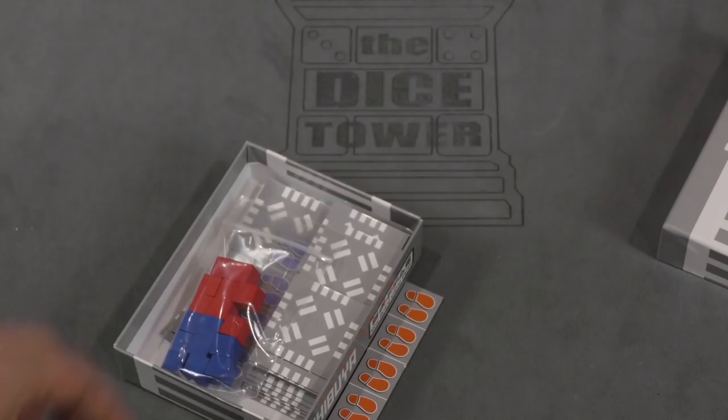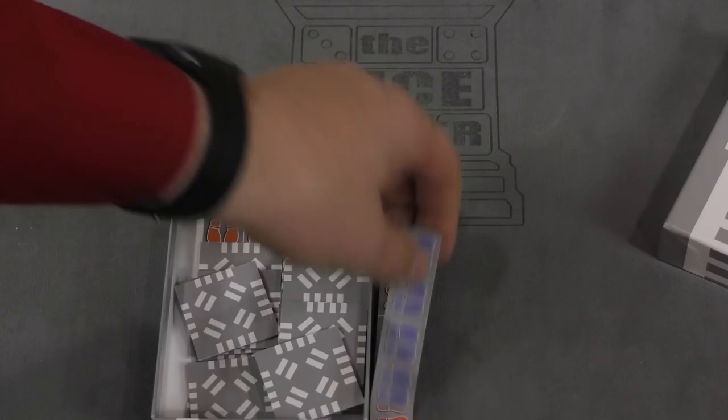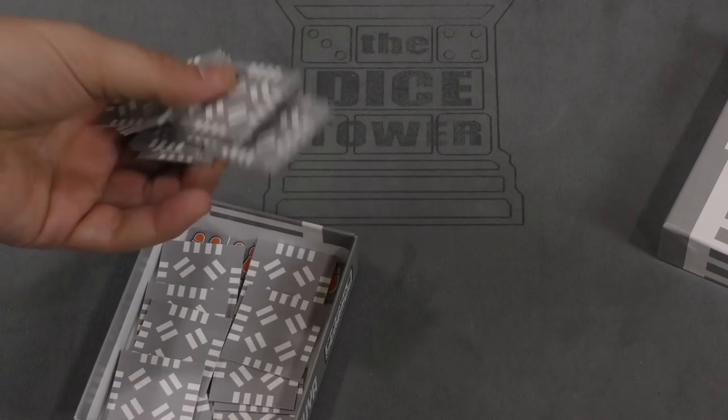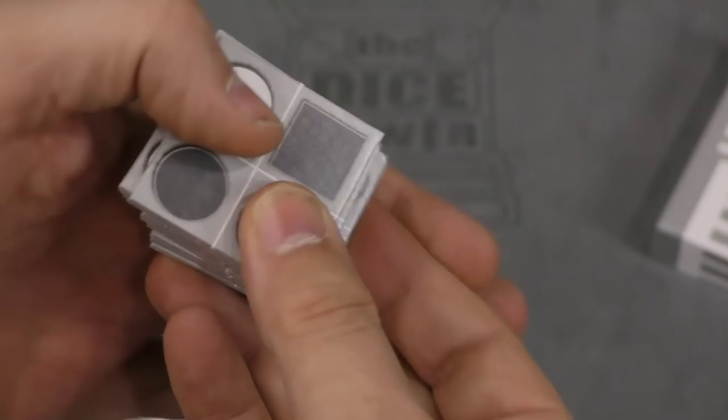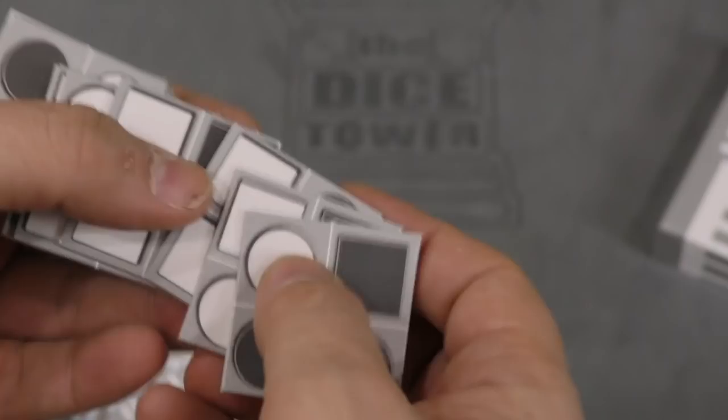We have a bag of red and blue cubes. We have some tiles that show blue feet and red feet. And then we have a bunch of street tiles here. These are fairly thin, but they show various shapes on the other side.